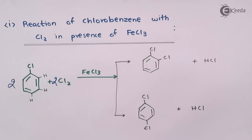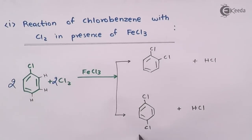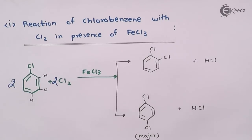1,4-dichlorobenzene is known as the major product. The reason is that it is more symmetrical. The electron-withdrawing group Cl is present on both sides, opposite to each other, so they have an inductive effect and the charge distributes more symmetrically. That is why this compound is more stable and is the major product. Para-dichlorobenzene is the major product compared to ortho-dichlorobenzene.